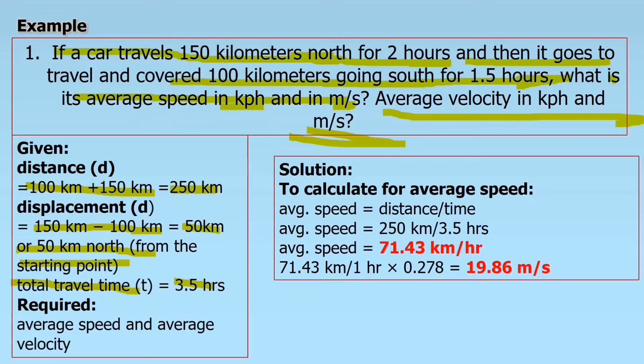In displacement, we have 150 kilometers north minus 100 kilometers equals 50 kilometers north from the starting point. Required: average speed in kilometer per hour and meter per second, and the average velocity. How are you going to solve this?